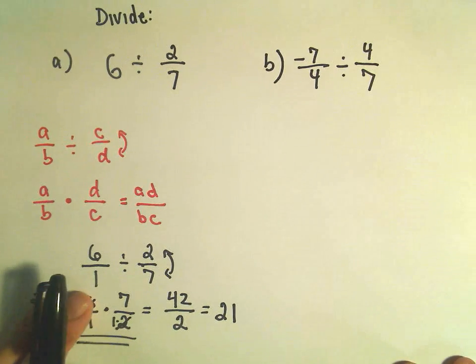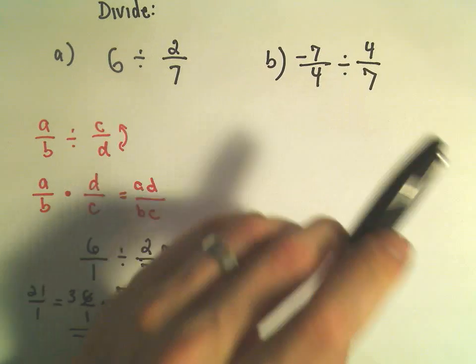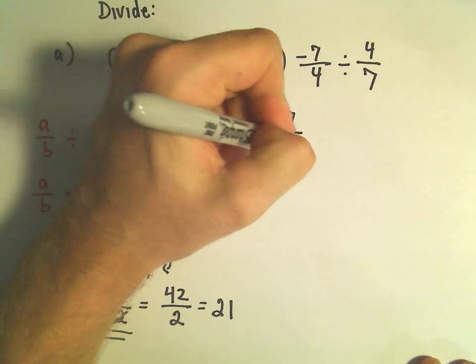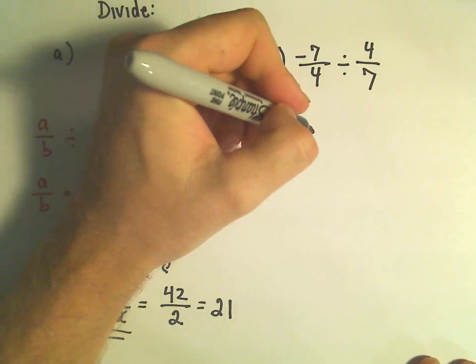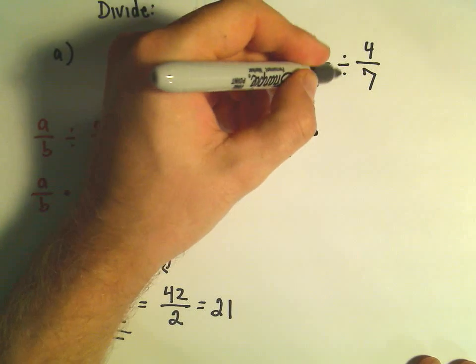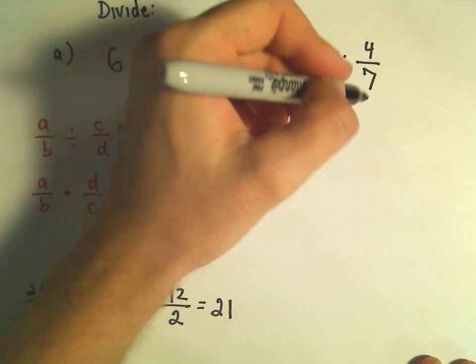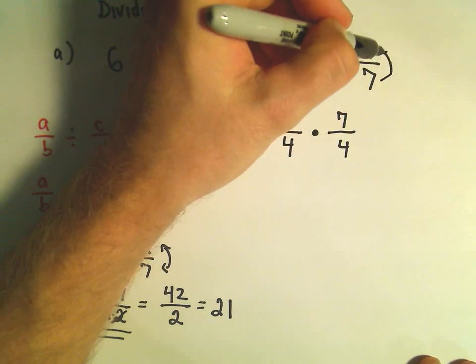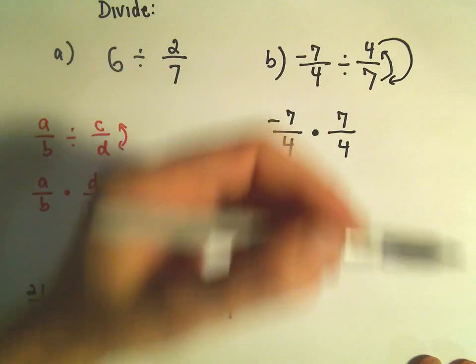Okay, so let's do our other example here. We have negative 7 fourths divided by 4 sevenths. Same idea. We just leave the first fraction alone. So negative 7 over 4. And then I turn my division into multiplication. And my second fraction, I just flip it over. So now the 7 goes on top and the 4 goes on the bottom.